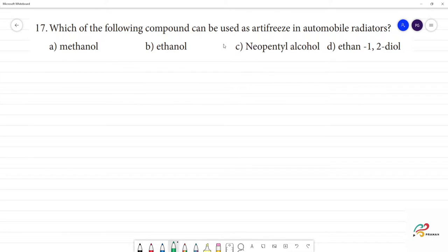Which of the following compound can be used as antifreeze in automobile radiators? This is ethane 1,2 diol, or we call it ethylene glycol. The formula is CH2OH CH2OH.